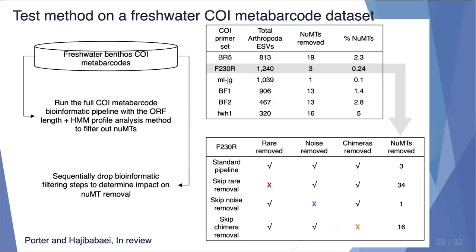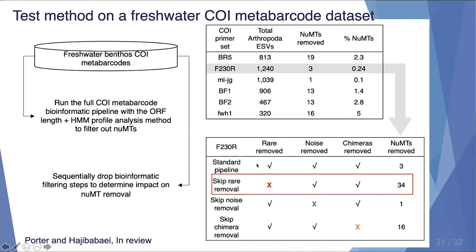We also tested our pipeline on a real freshwater CO1 metabarcode dataset using six different primer sets, and we recorded the number of NUMTs we were able to screen out. With the FWH1 amplicons, we were able to remove 5% of our exact sequence variants. We also sequentially removed filtering steps from the standard pipeline to see the effect on NUMT removal. We found that skipping the rare sequence removal step allowed us to recover many more NUMTs, meaning that existing bioinformatic pipelines are already removing many of these artifactual sequences — but our pipeline can remove a few more.